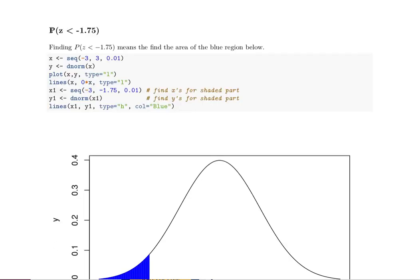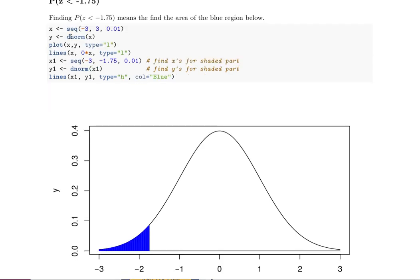Okay, so here's the first example: the probability that Z is less than negative 1.75. So here's the graph, there's negative 1.75 right here, and we're looking for the probability that Z is less than that particular amount, so we're looking for this blue area.